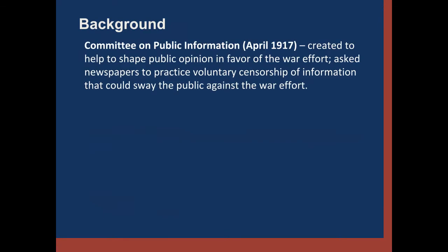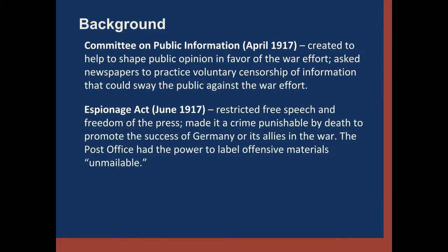Students first look at a one-page background reading. Key highlights include: the Committee on Public Information, created about a week after the U.S. declared war against Germany and entered World War One. This committee was created to help shape public opinion in favor of the war effort and was made up of members of President Woodrow Wilson's cabinet plus a special appointee. One thing the committee did was ask newspapers to practice voluntary censorship — self-censorship of information that might sway the public against the war.